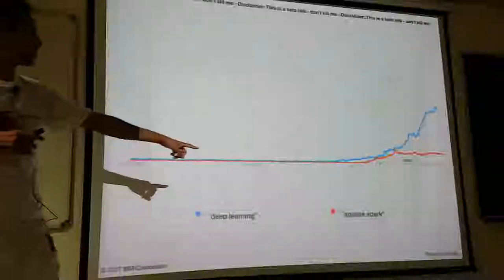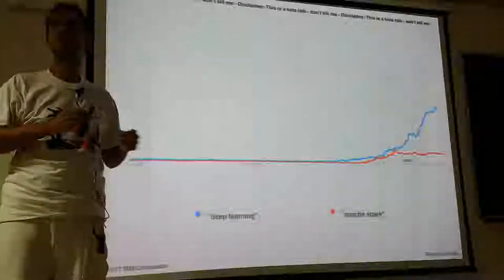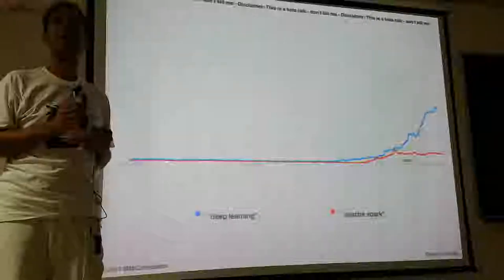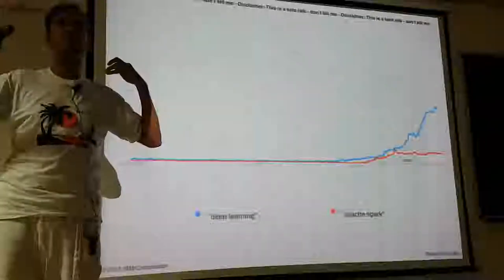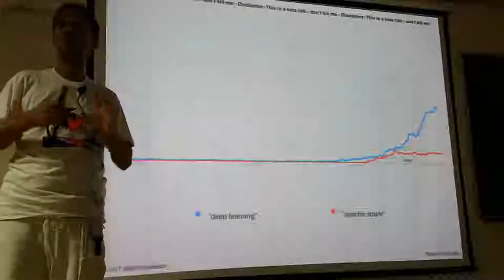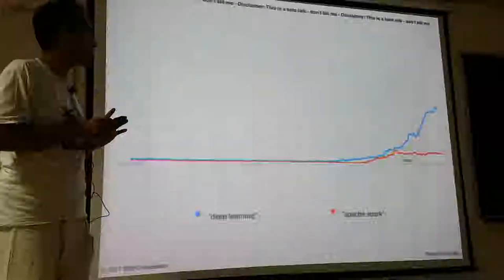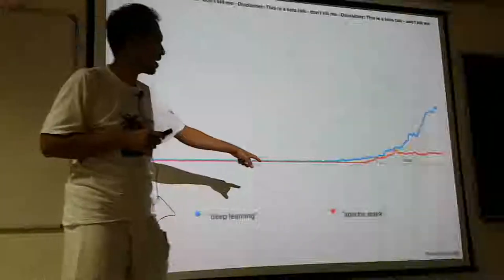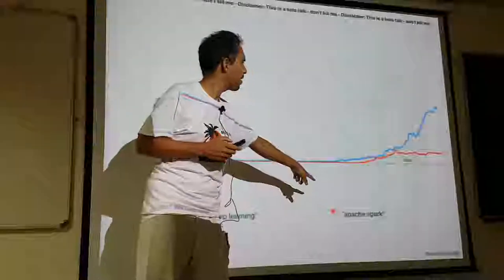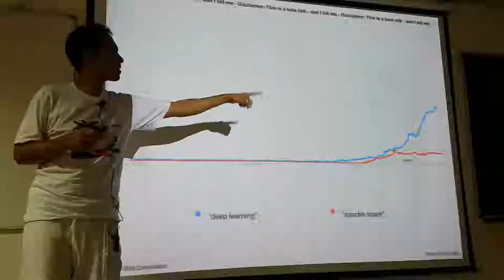There are two topics: Deep Learning and Apache Spark. Apache Spark is an open source distributed data processing engine which scales linearly, and that was really a hype. But here, Deep Learning was overtaking Apache Spark.